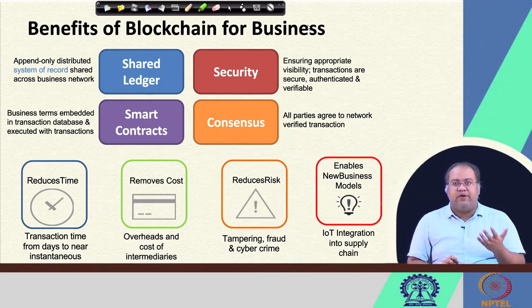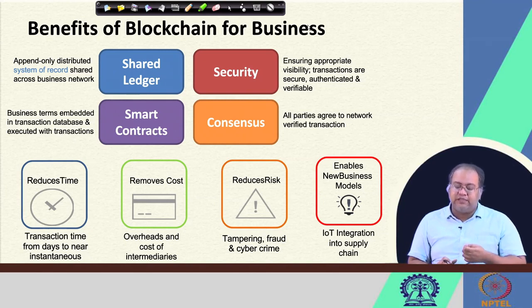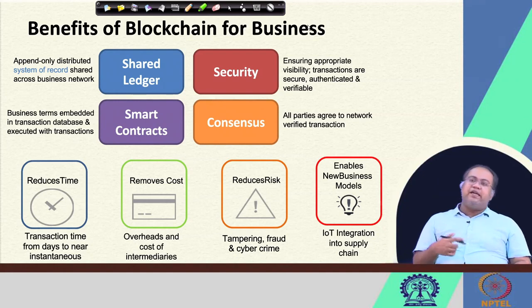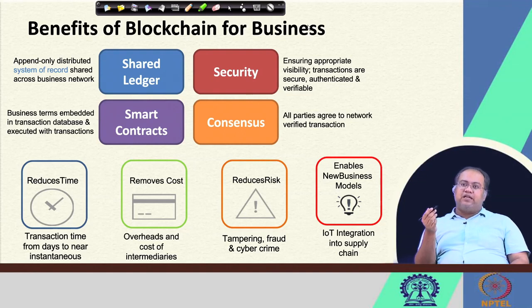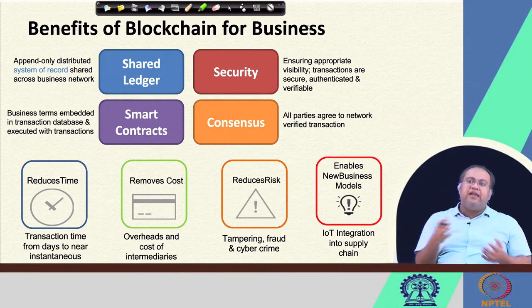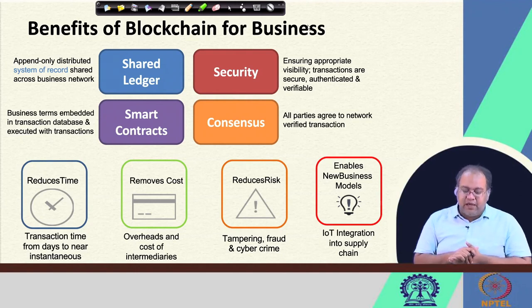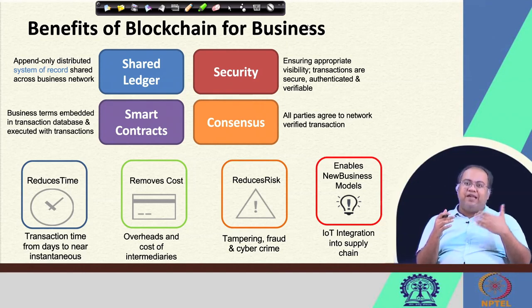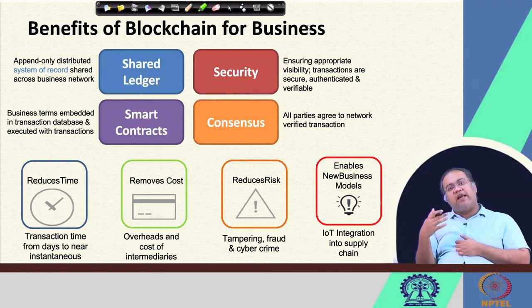The third pillar of blockchain is security — it ensures appropriate visibility of information across different stakeholders and keeps transactions secure. Anyone can verify transactions happening in a blockchain-based system, while the transactions remain anonymous. But at the same time, the person claiming a transaction can do so in a secured way. Finally, the consensus mechanism at the backend ensures all parties agree to network-verified transactions — everyone is in the same frame, seeing the same information and making decisions based on it.